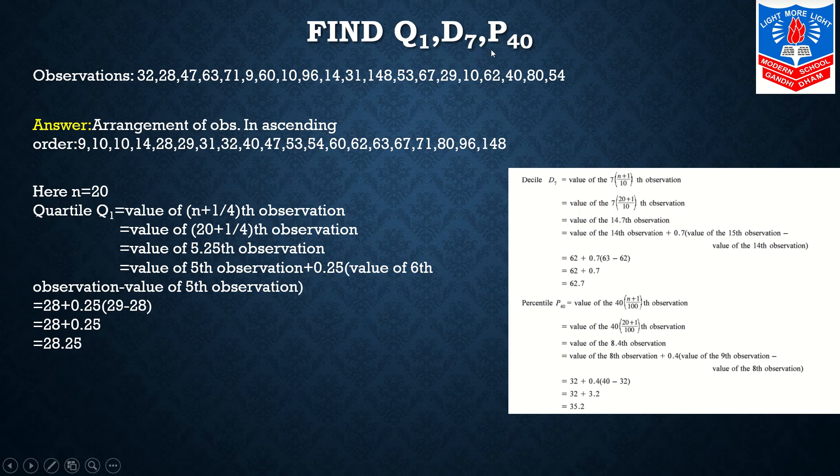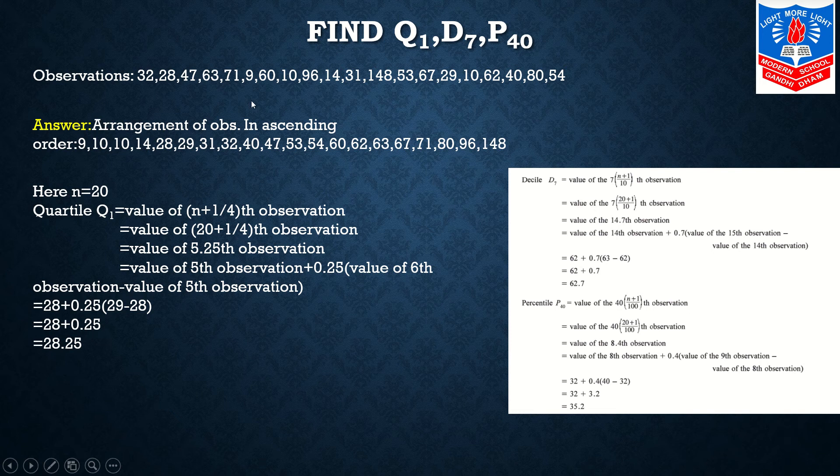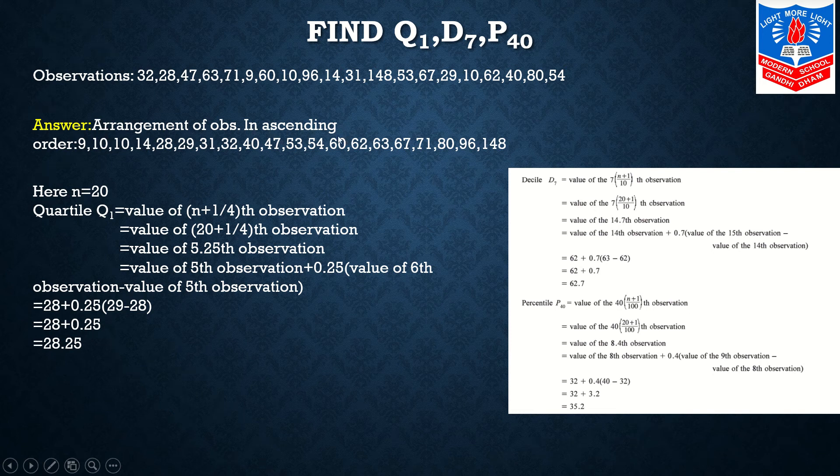Over here you are supposed to find out Q1, D7 and P40. This is my question part. Observations are given. As I said to you people in the theory, our very first step whenever we need to calculate the positional averages is to arrange the data in order. So over here it is arranged in ascending order.